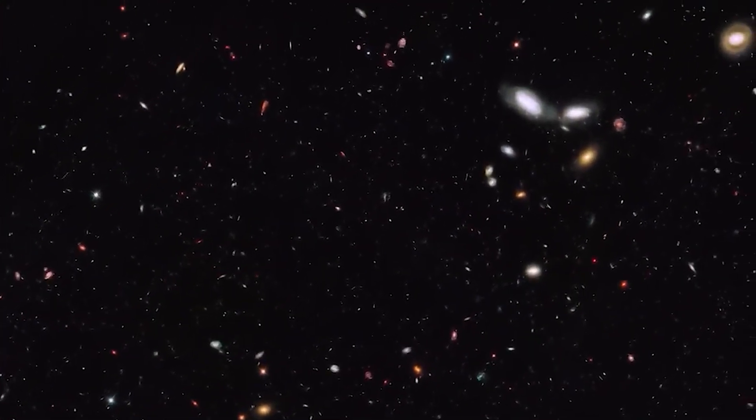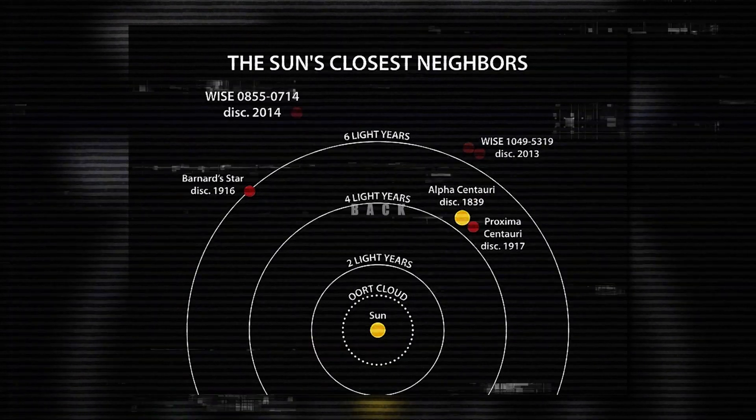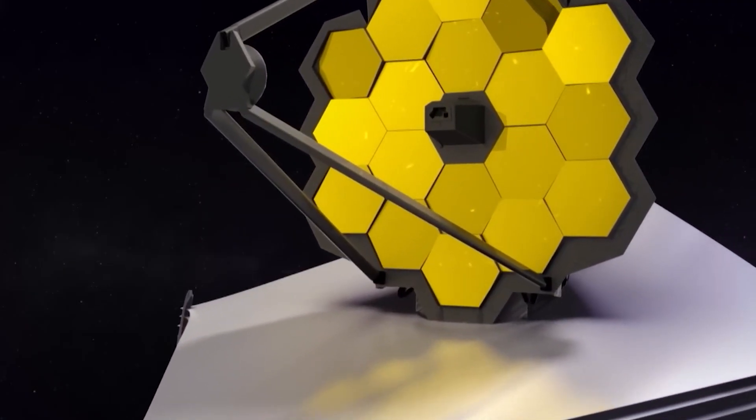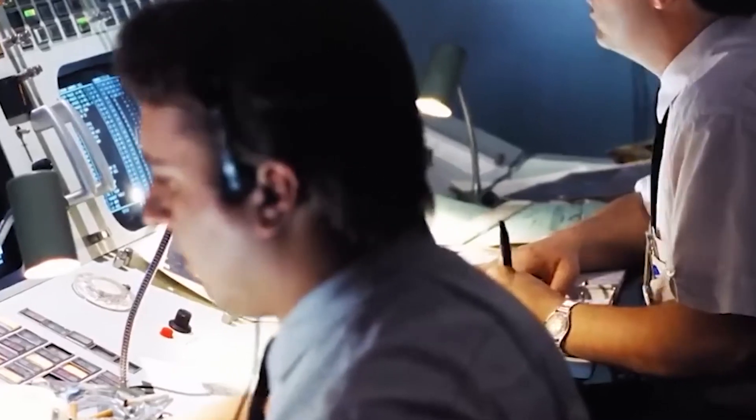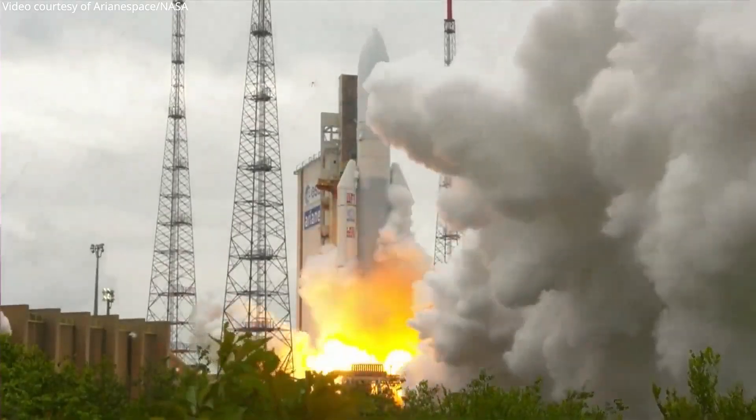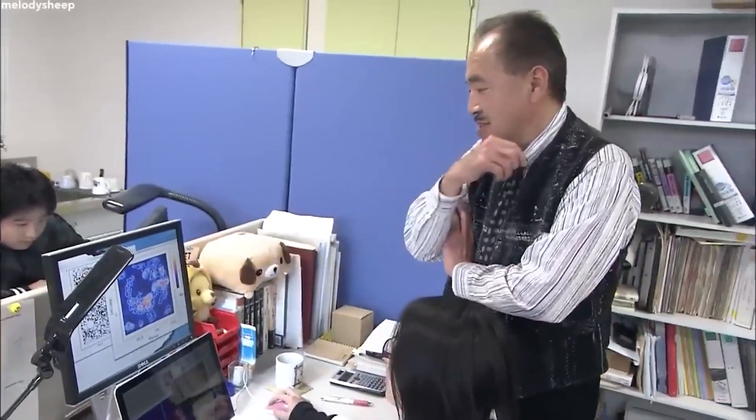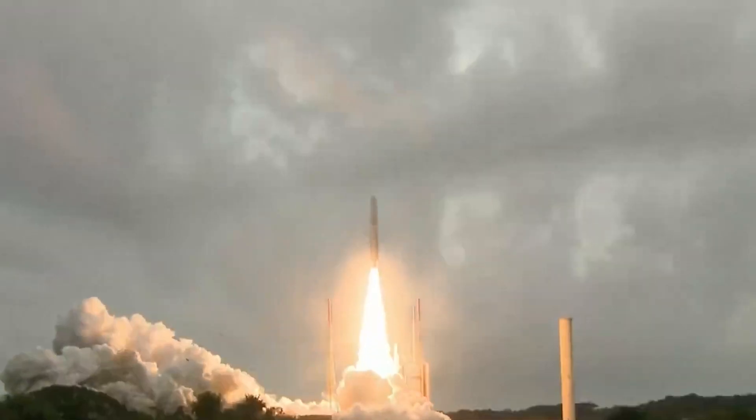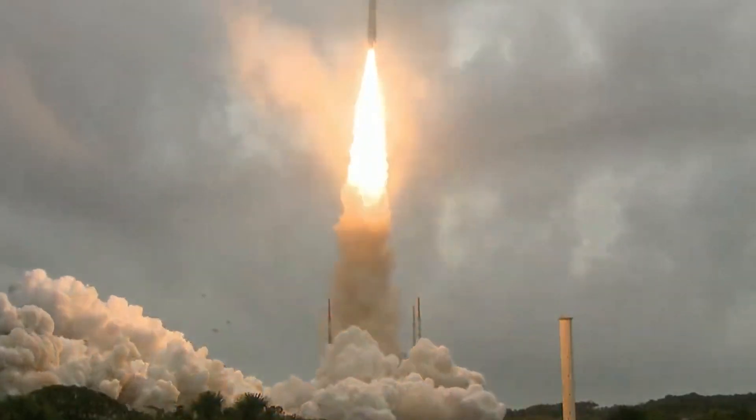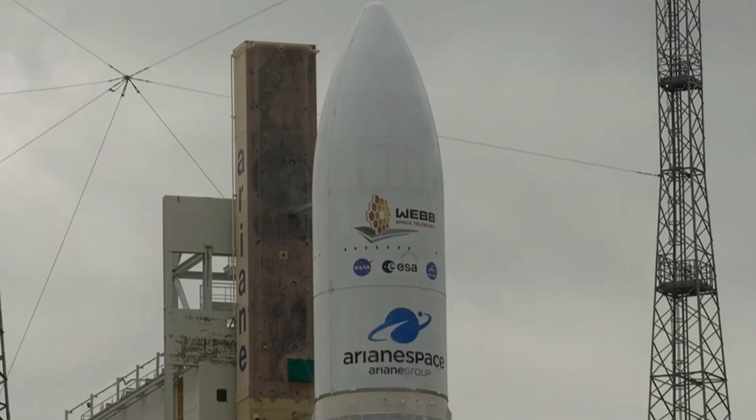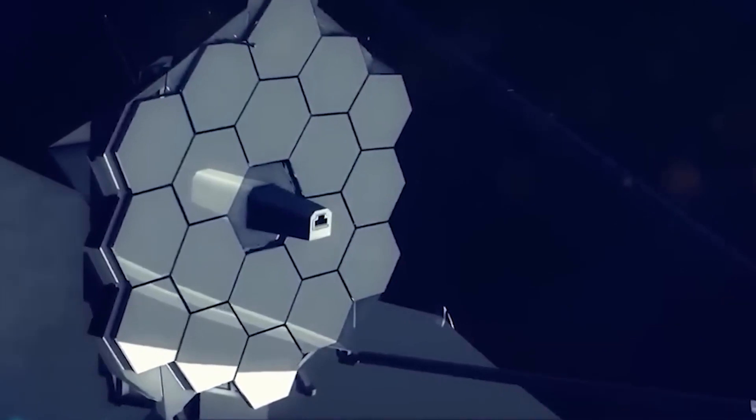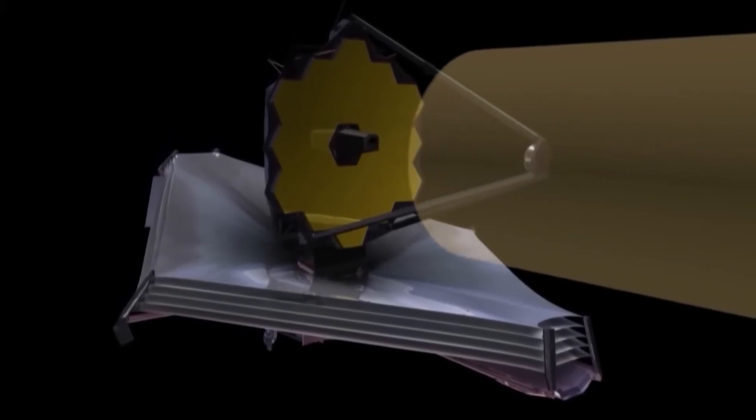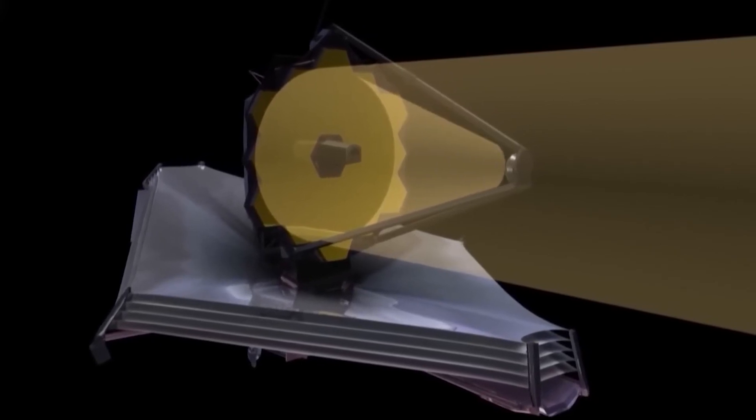The James Webb Space Telescope, also known as the JWST, is a joint mission by NASA, the European Space Agency ESA, and the Canadian Space Agency CSA. This ambitious project was first proposed in 1996 and was set to launch in 2007, but it faced numerous delays and setbacks. After more than two decades of planning and development, the JWST finally launched on December 25, 2021 from the European Spaceport in French Guiana. The JWST is the most powerful space telescope ever built, with a primary mirror diameter of 6.5 meters, more than 100 times the light-gathering power of the Hubble Space Telescope.